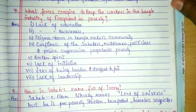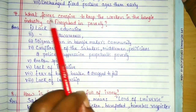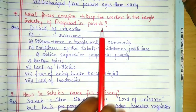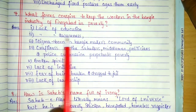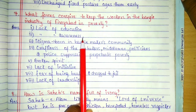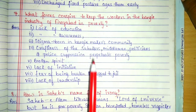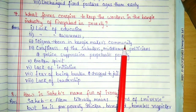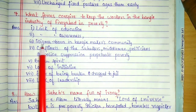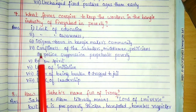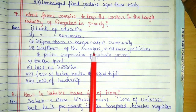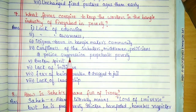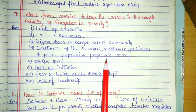What forces conspire to keep the workers in the bangle industry of Ferozabad in poverty? Lack of education is number one. Lack of awareness about their rights and facilities. Then stigma — they think that being born in a bangle-making community, they have to take up bangle making only. This stigma is ruining their life. Next, the craftiness of the sahukars, middlemen, politicians, and policemen who always suppress these workers.